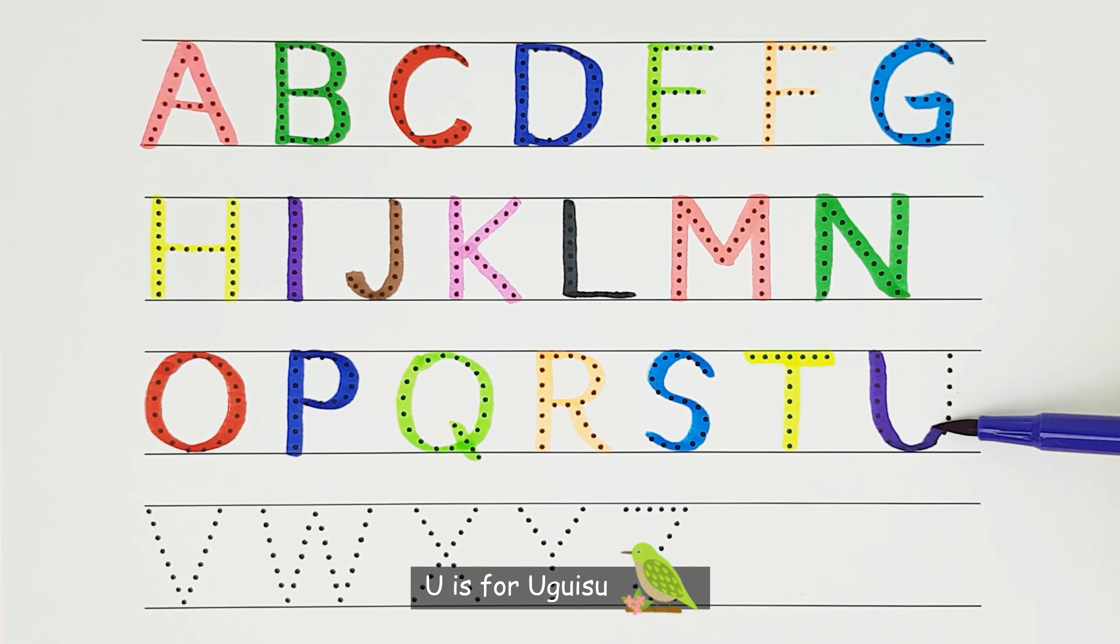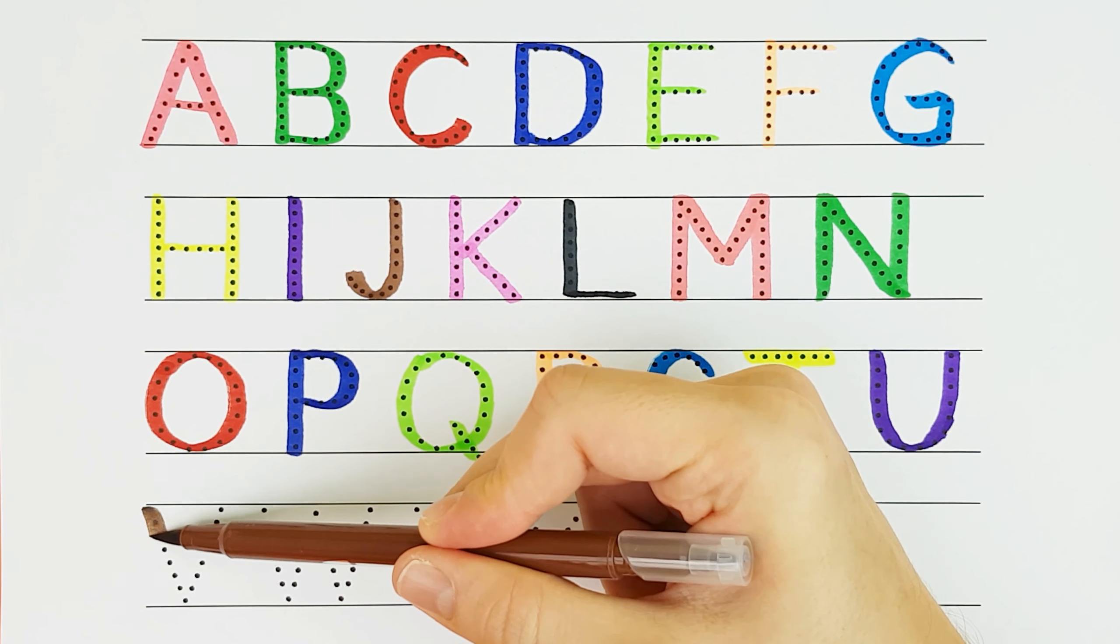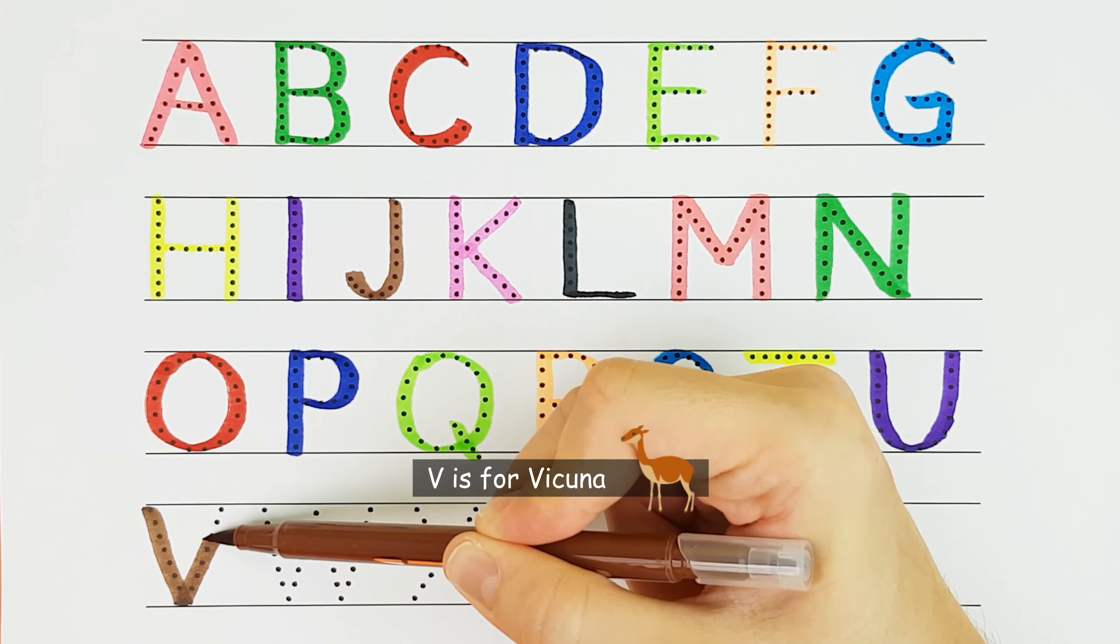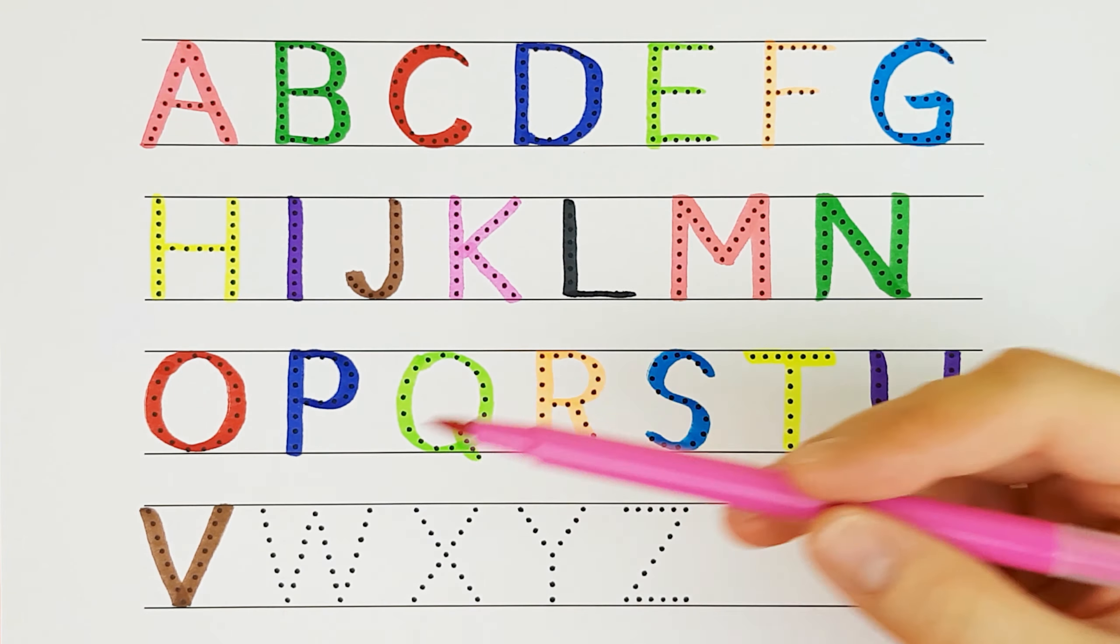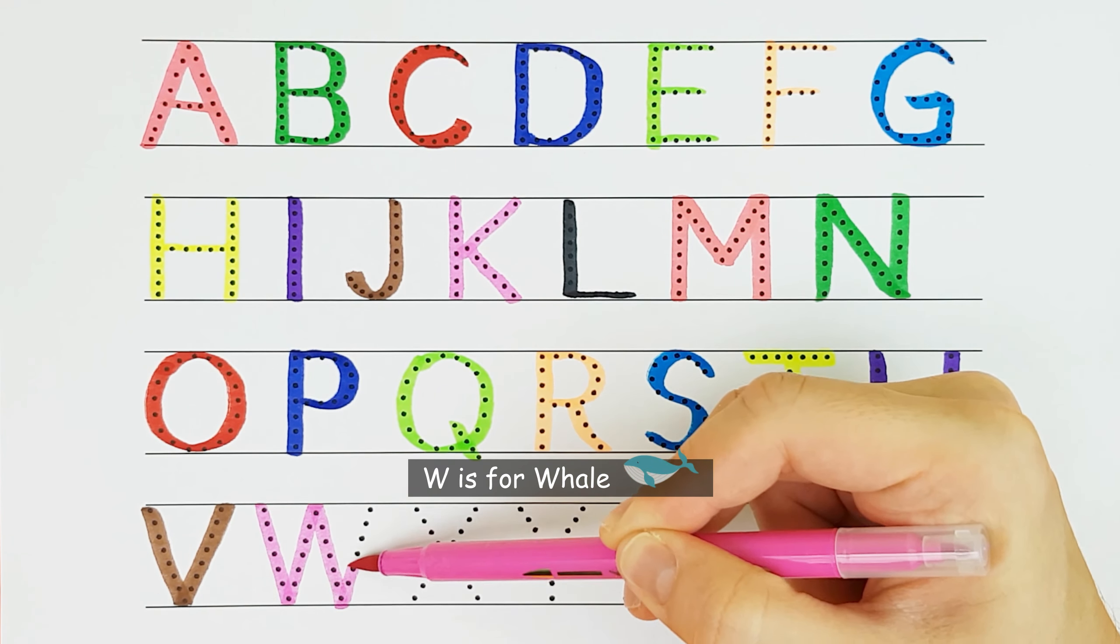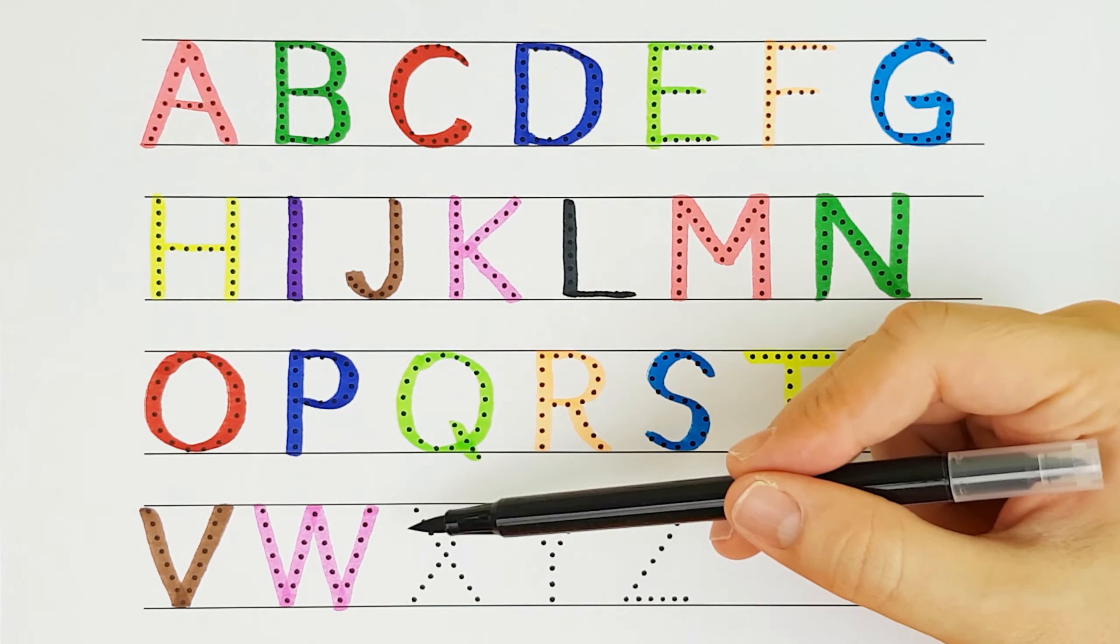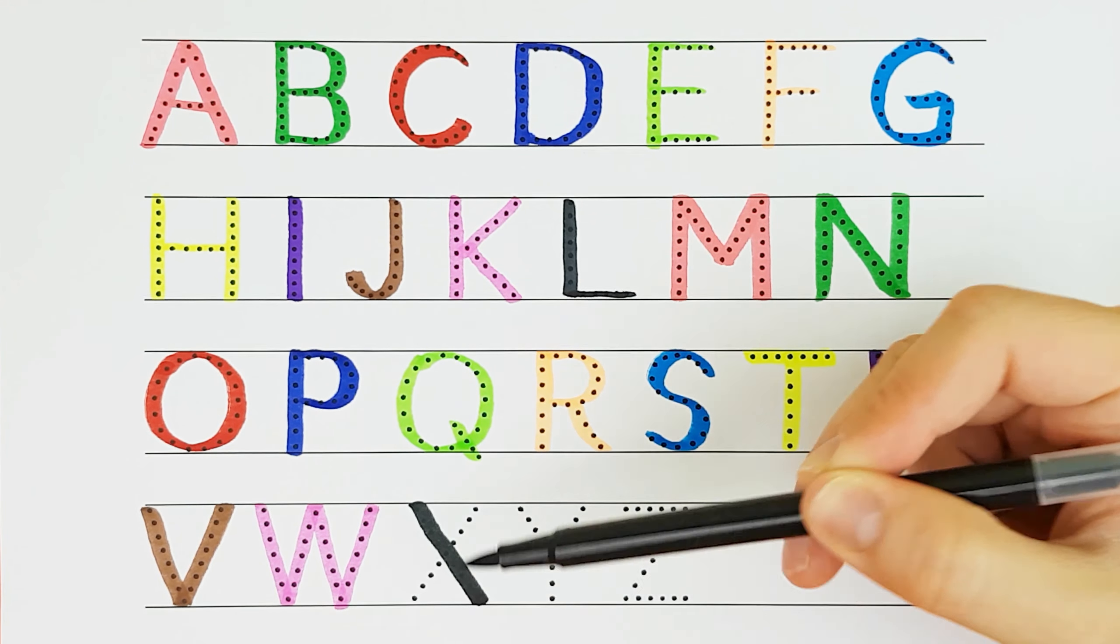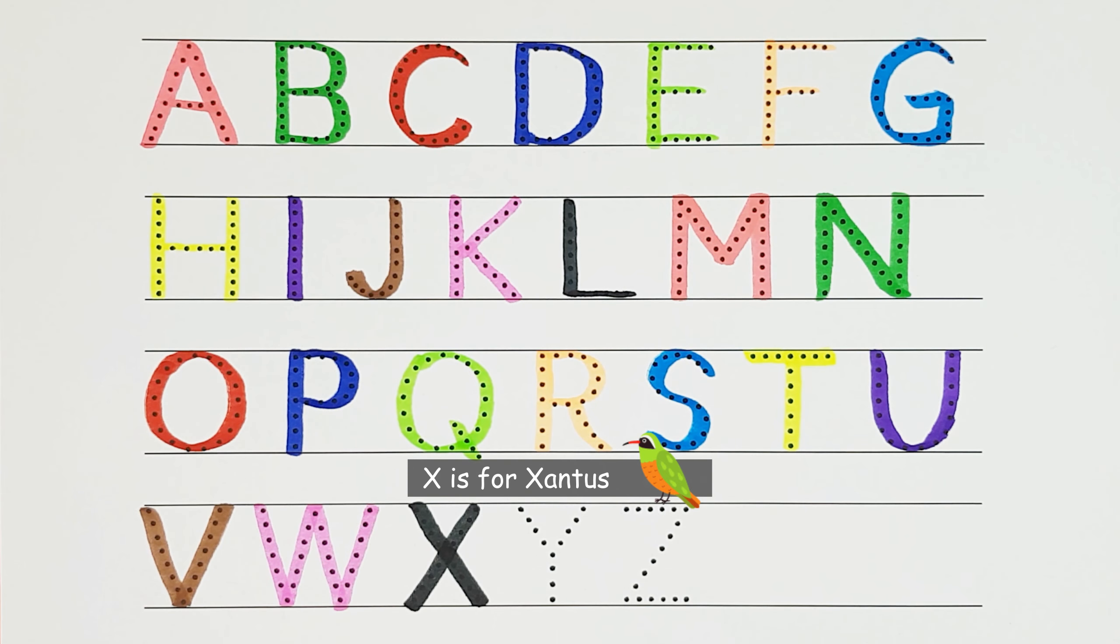U. U. U is for Uguisu. U. V. V. V is for Vicuna. V. W. W. W is for Whale. W. X. X is for Xanthus. X.